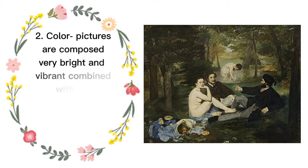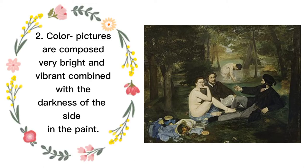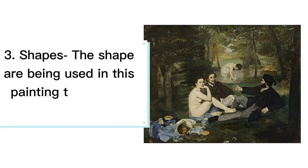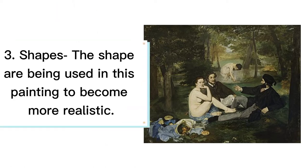Number 2 is the color. The way Manet painted the painting is described in landscape form, meaning in outdoor scenes. That's why a lot of colors are found in this painting. Number 3 is the shapes. The shapes are being used in this painting to make it more realistic.